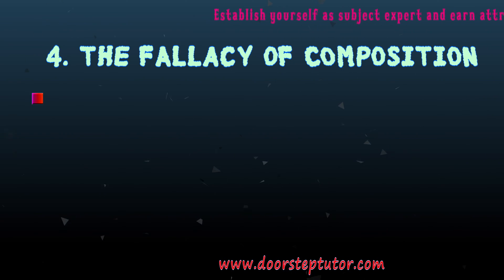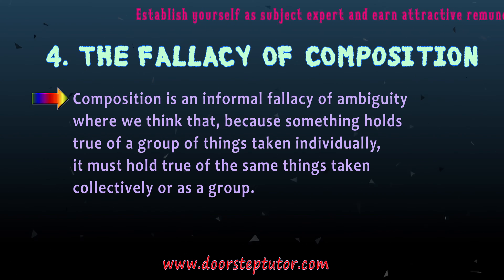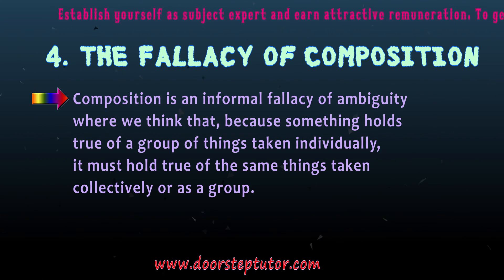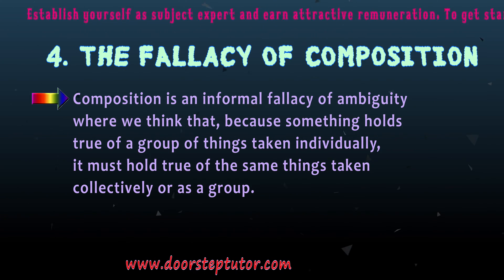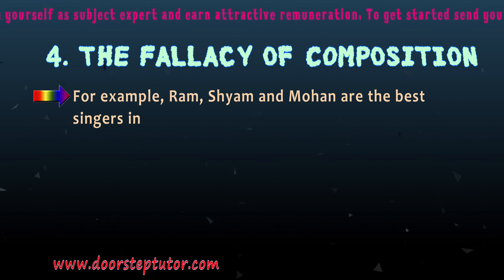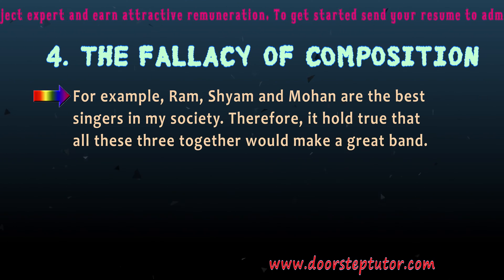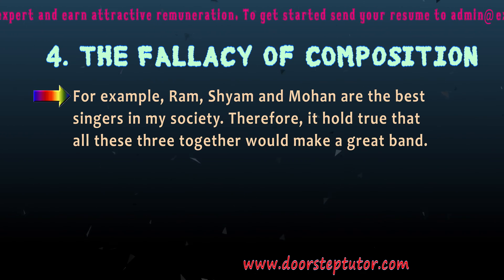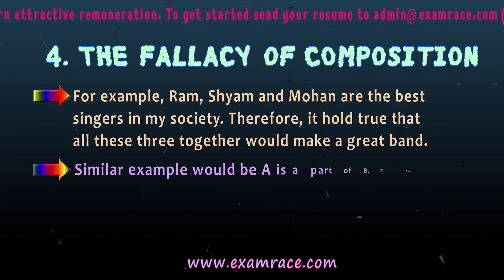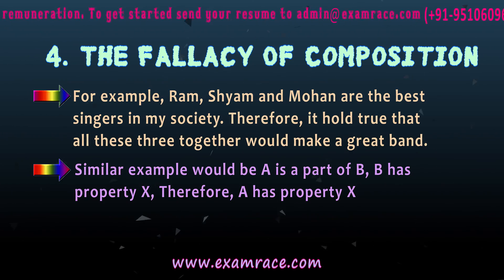Fallacy of Composition: Composition is an informal fallacy of ambiguity where we think that because something holds true of a group of things taken individually, it must also hold true of the same things taken collectively or as a group. For example: Ram, Shyam and Mohan are the best singers in my society, therefore all three together would make a good band. A similar example: A is a part of B; B has property X; therefore A has property X.